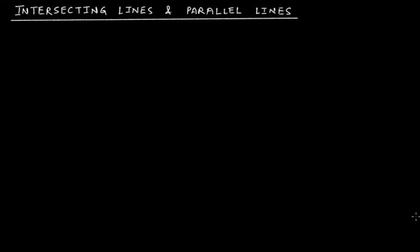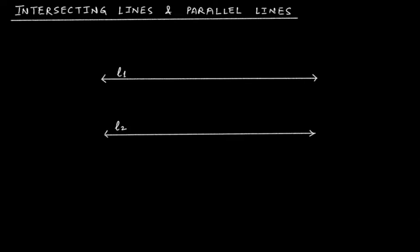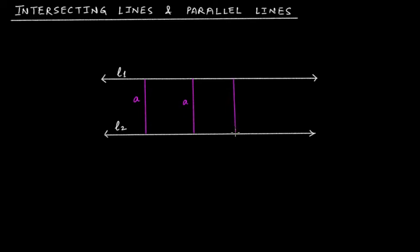Welcome to the video presentation on intersecting lines and parallel lines. If you look at these two lines, you can see that at this position, whatever distance you have — let's call it 'a', some arbitrary number — the distance between these two lines at this position is 'a'. If you take a measurement at this position, it will again come as 'a', and if you measure the distance between these two lines at yet another position, it will be 'a' again.